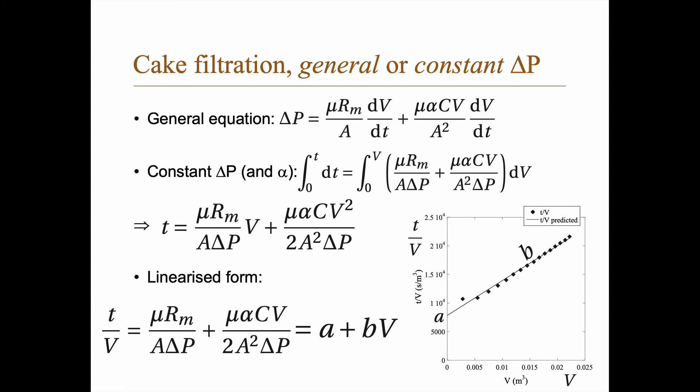Now, you can actually linearize this equation. And if you do that, if you take divide both sides with V, you get t divided by V equals mu Rm divided by area delta P plus a part here that depends on V, which you can simplify and say that this is essentially a plus bV. So if you plot your results, you should expect that you get a linear equation if everything seems correct. And now note this outlier here. This is often the case that the first value will be a bit off. And we will discuss that in the lab as well.